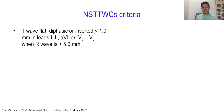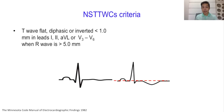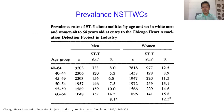The third criteria for nonspecific ST-T wave change is the presence of a T wave which is flat, diphasic, or inverted in leads 1, AVL, V3, or V6, when the R wave is 5 millimeters or more.